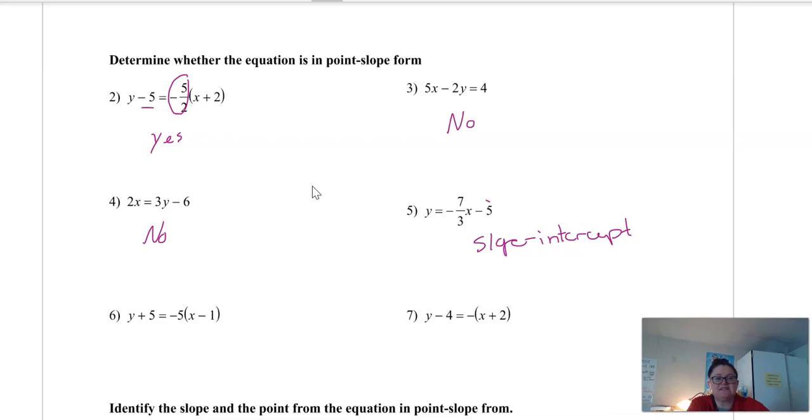Okay, so here we have y plus 5. That's still in point-slope form, because this would just mean that our y value was negative 5, so two negatives made a positive. And then here, we've got y minus 4, and then the thing that might trip you up on this one is there's just a negative here, but that just means that m is negative 1. So this is still in point-slope form. So hopefully, you can kind of see what point-slope form is going to look like. It's going to look like y plus or minus a number equals the slope parentheses x plus or minus a number.